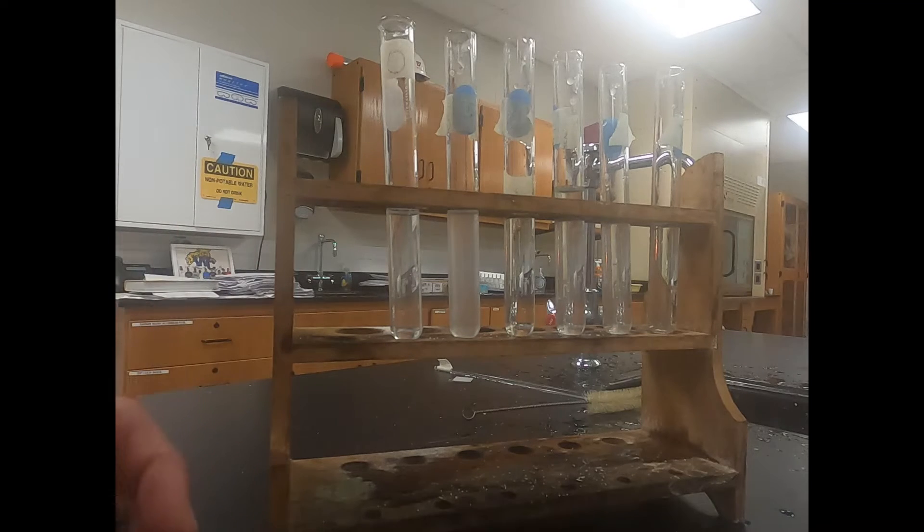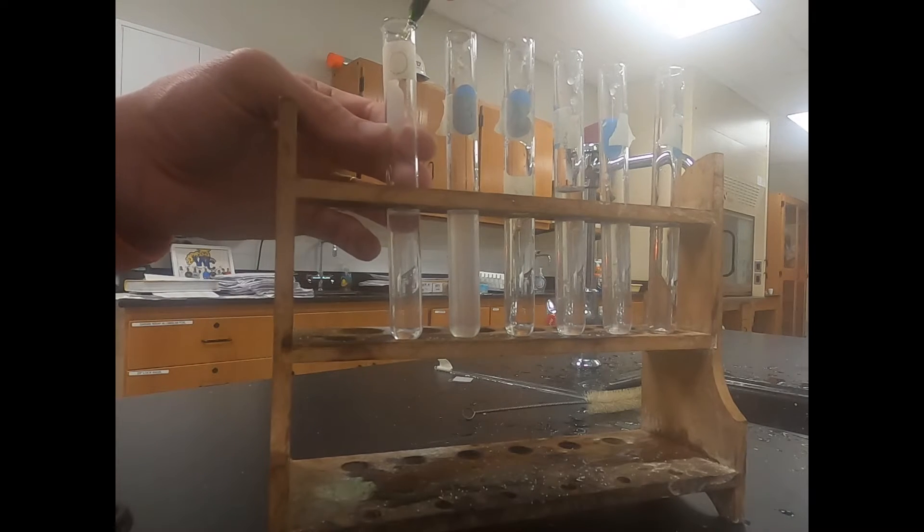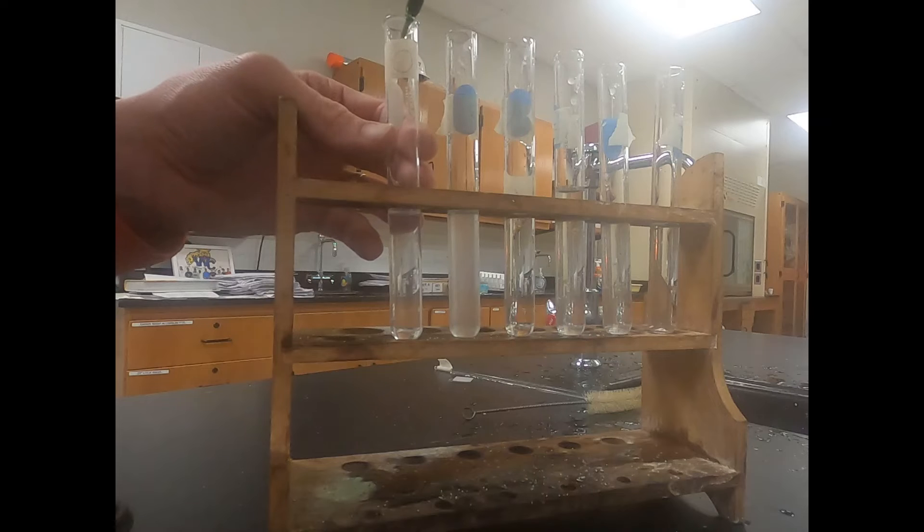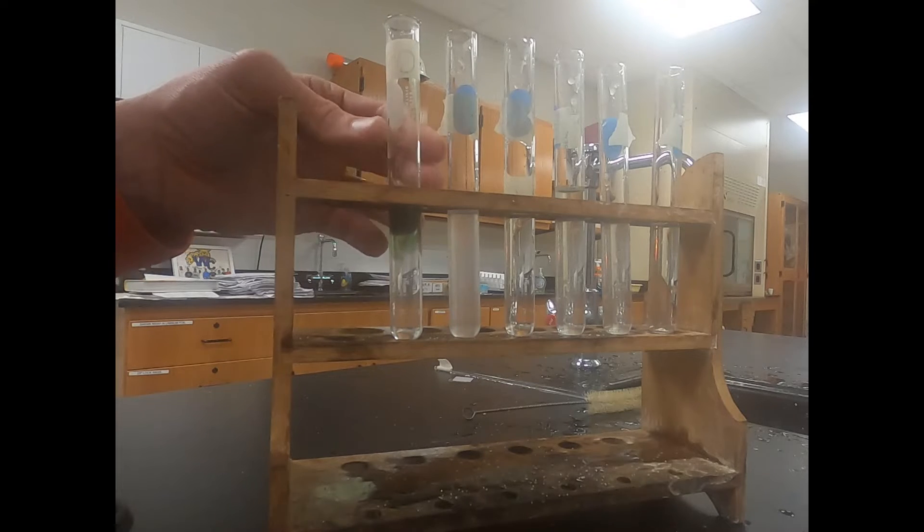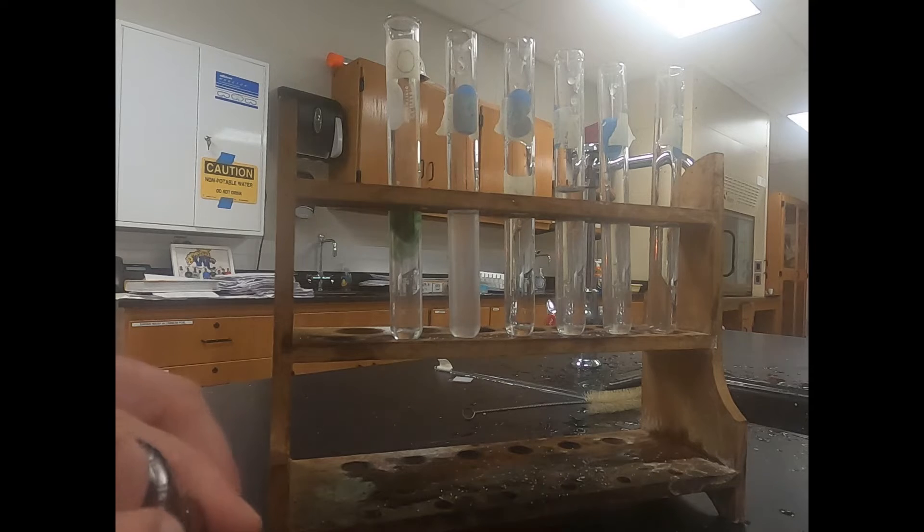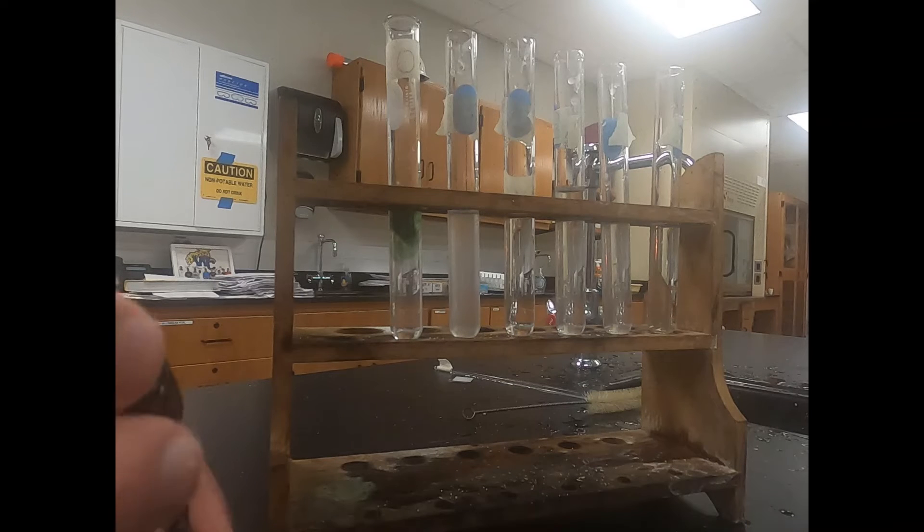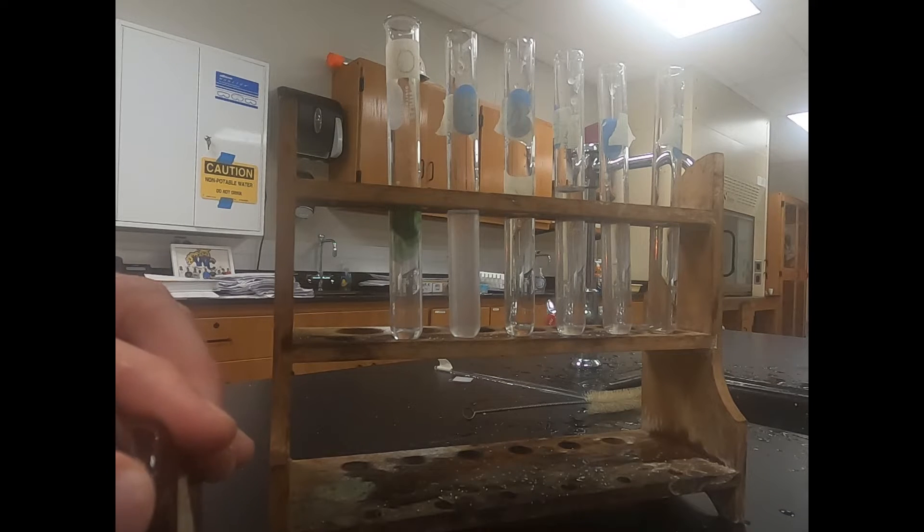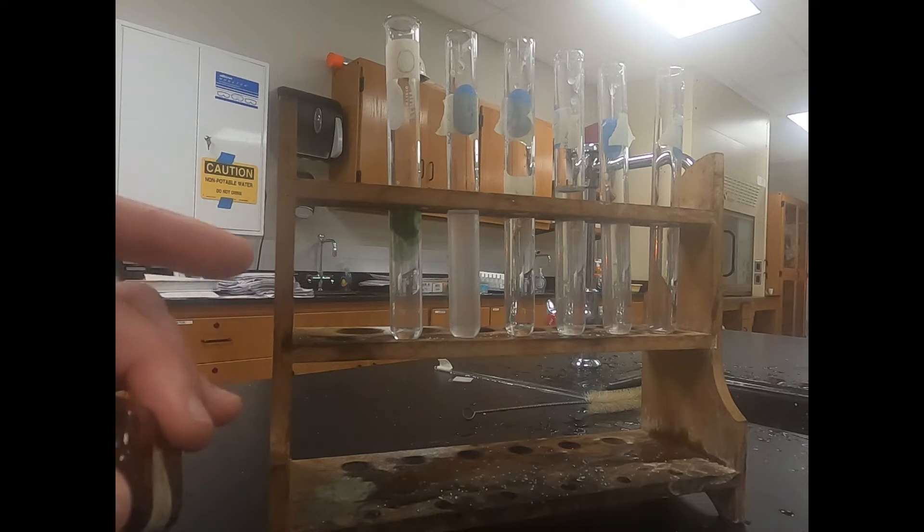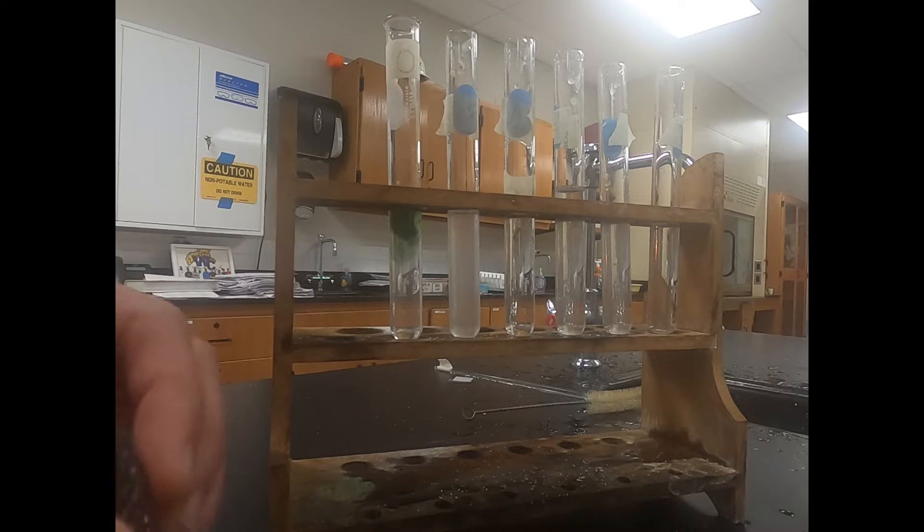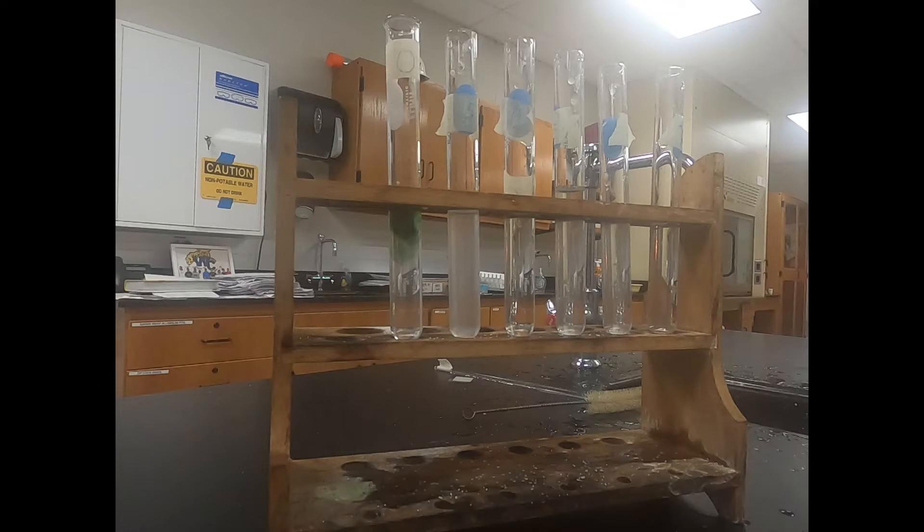Bromethyl blue is an indicator. In the presence of carbon dioxide it's going to turn to a yellow appearance. As the concentration of carbon dioxide increases it's going to become a stronger or darker yellow. It's a gradual change as the pH of the water changes. We'll add that to each one of our test tubes.